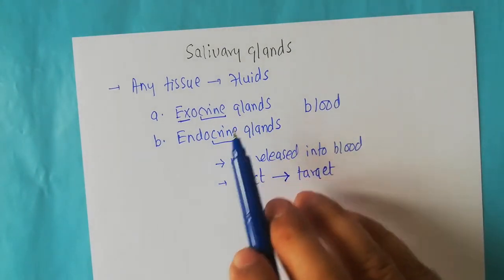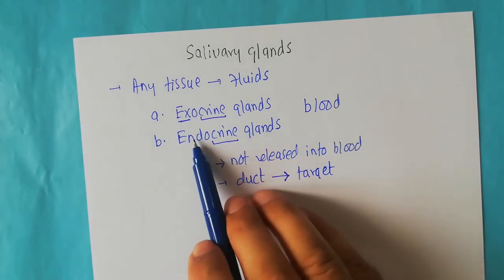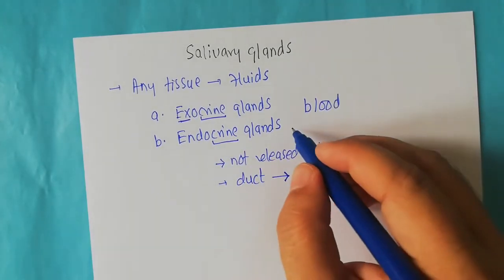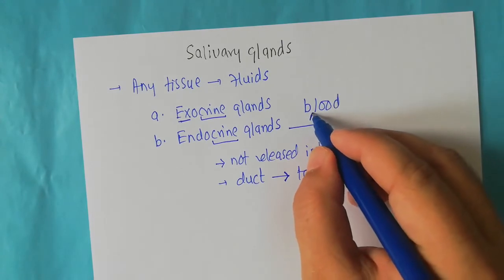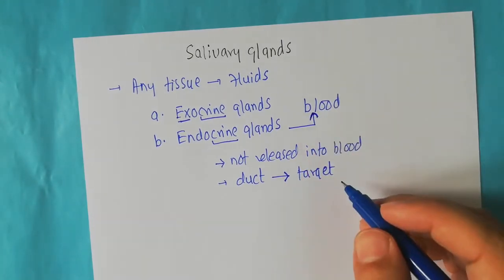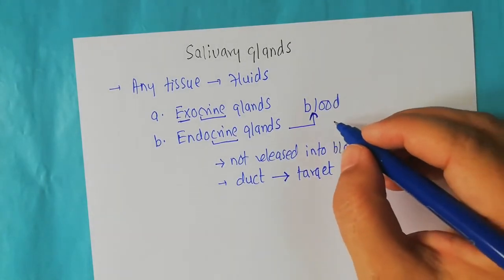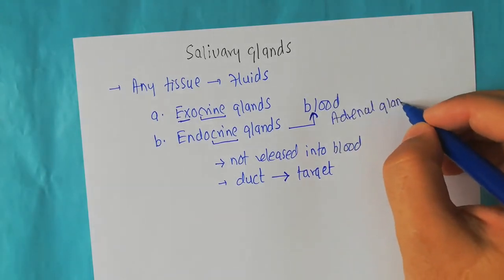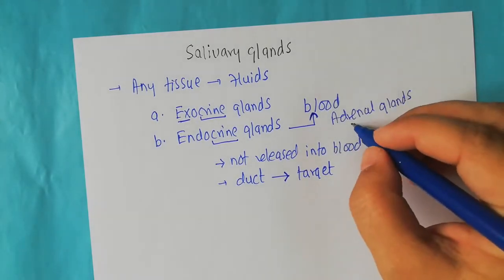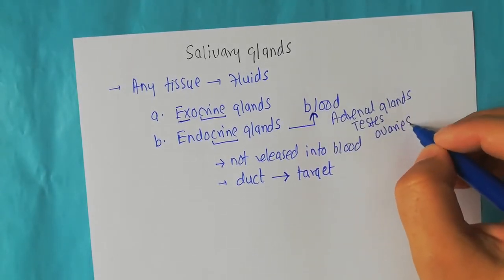The second type of glands is known as the endocrine glands. As the name indicates, endocrine means into the blood — so the secretions of endocrine glands go into the blood. Famous examples of endocrine glands include the adrenal glands, which are present on the surface of the kidneys, the testes, and the ovaries.